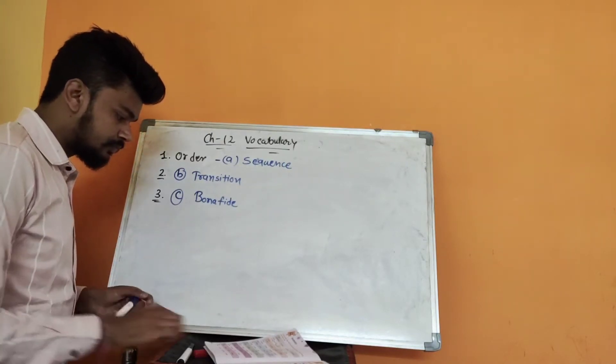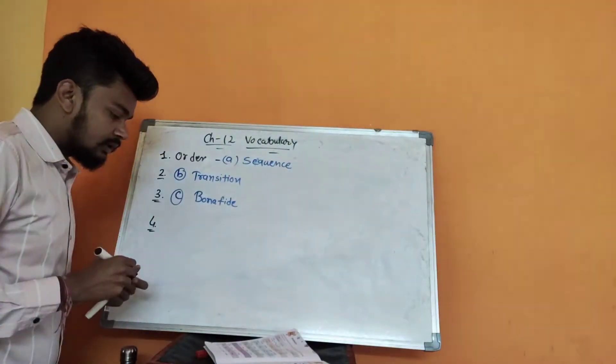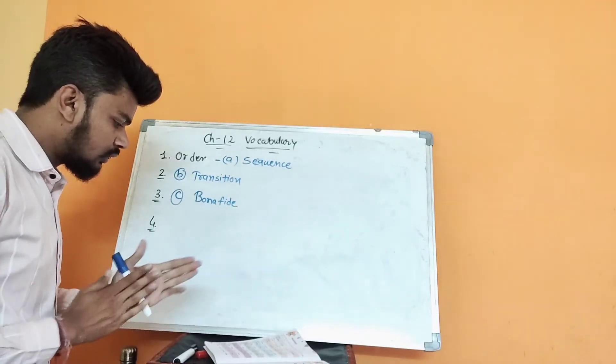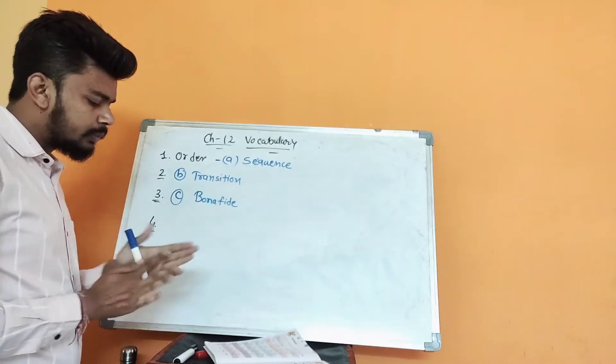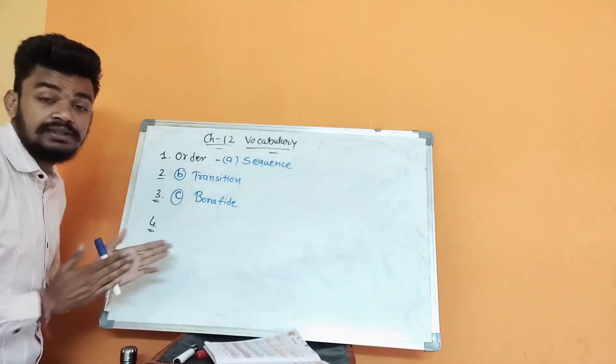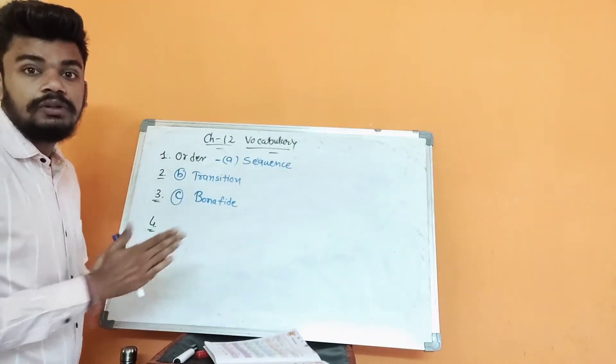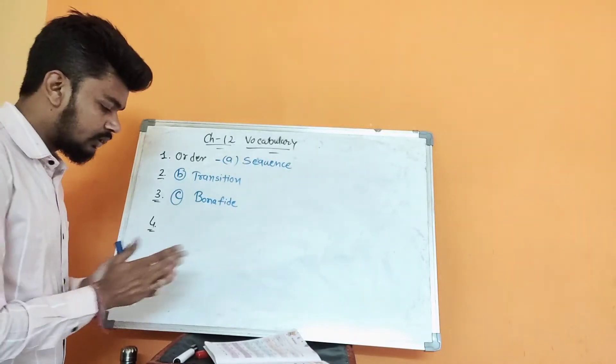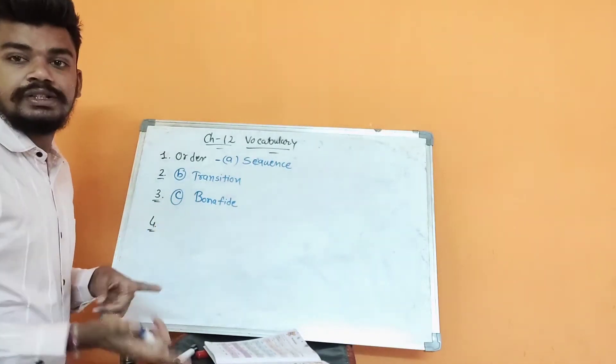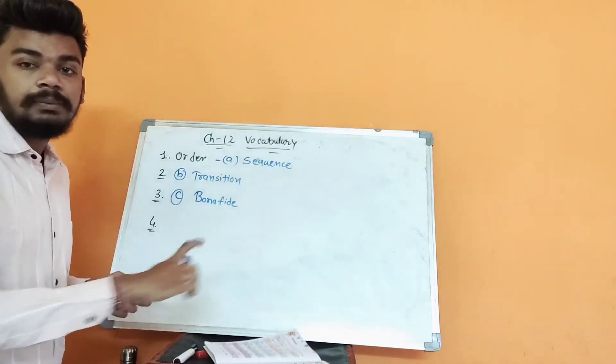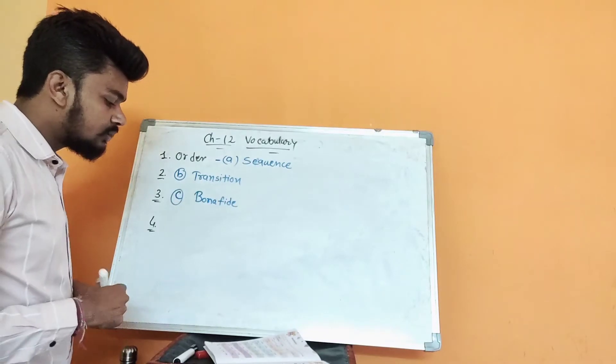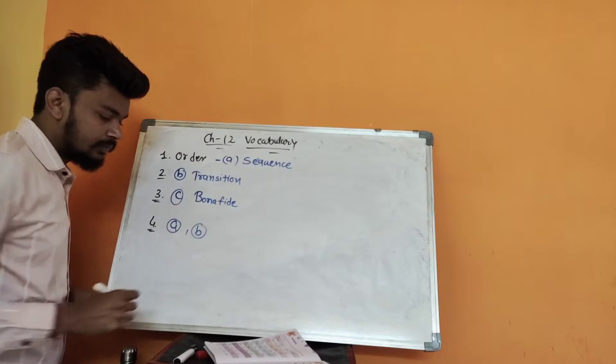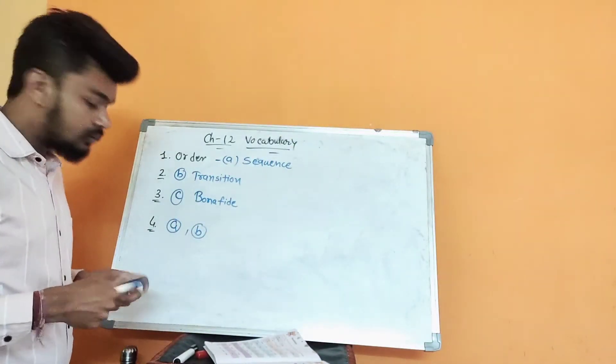Fourth one: distinct. Distinct meaning is separate. In this one we can say that there are two options. First one is given as separate, so separate means to be apart, and different also means to be different. Outstanding cannot be done and apparent also cannot be. By default, both are the closest meaning. The answer in this fourth question, both are the answer: A and B, because separate also can become and different also can become.